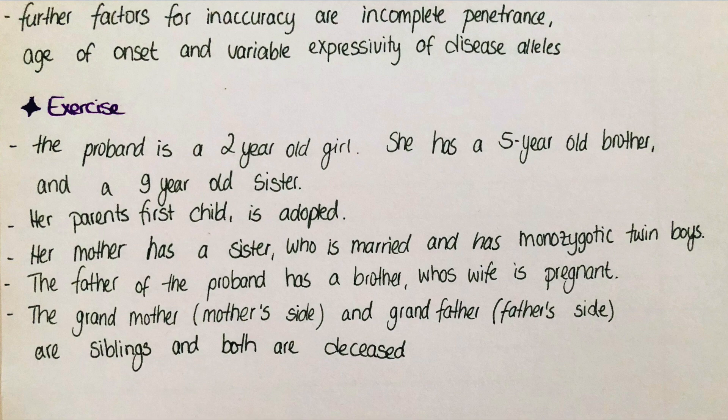She has a five-year-old brother and a nine-year-old sister. When people of the same generation are siblings, we start with the youngest on the left side. So our proband will be on the left, then the five-year-old brother, then the nine-year-old sister on the right. The parents' first child is adopted — so the nine-year-old girl is adopted.